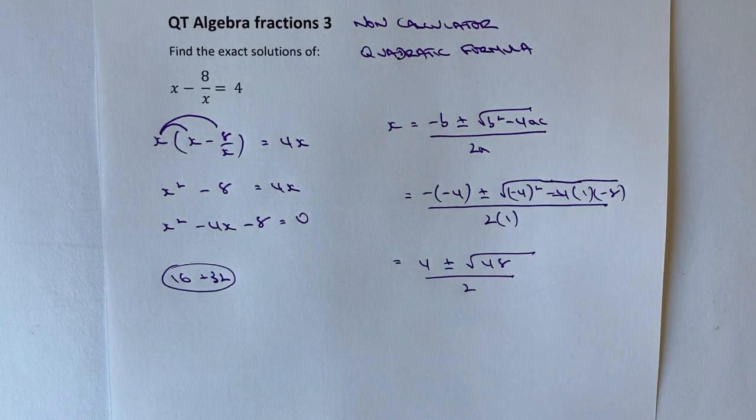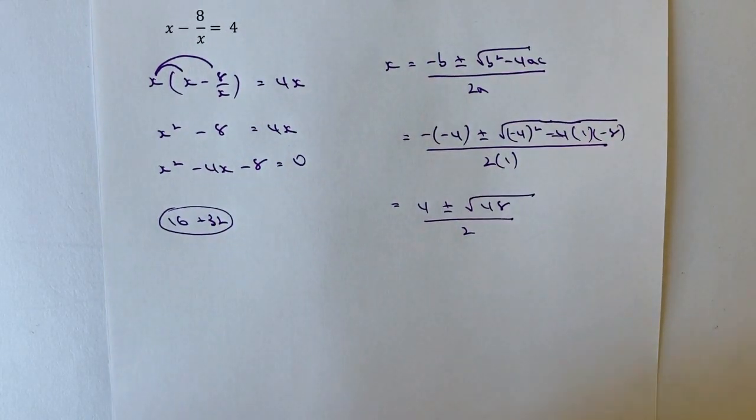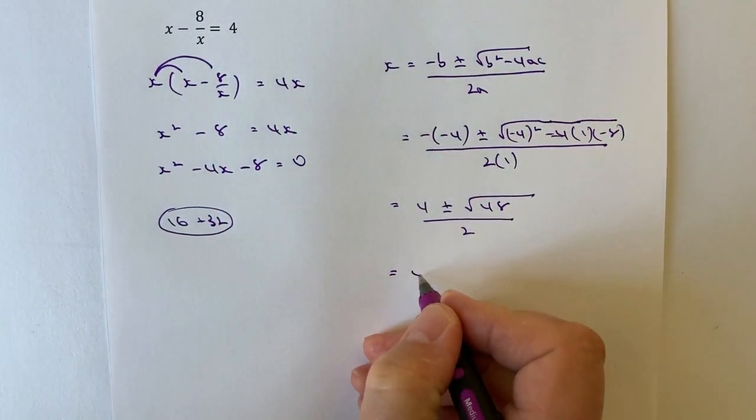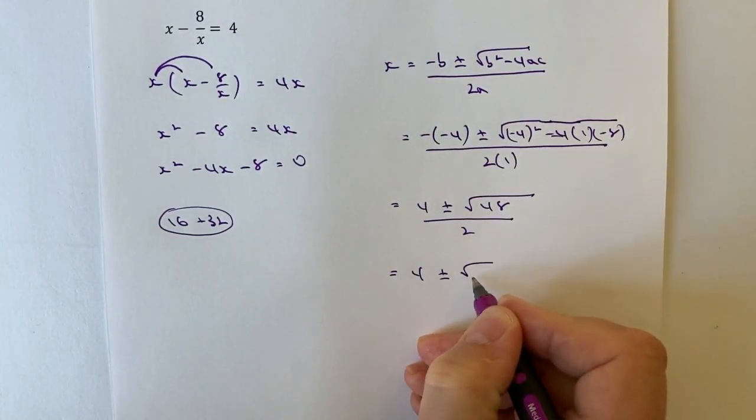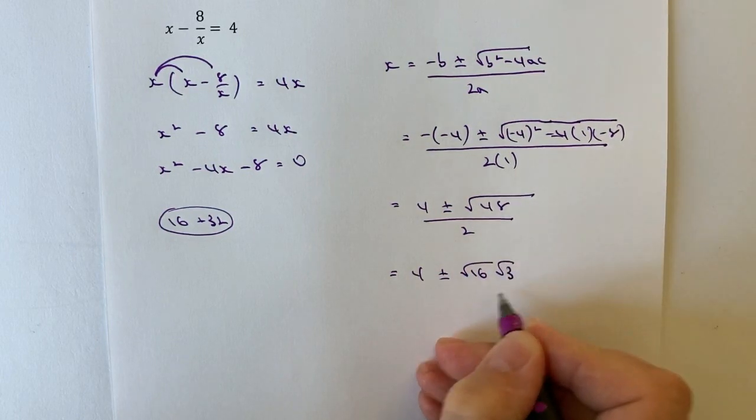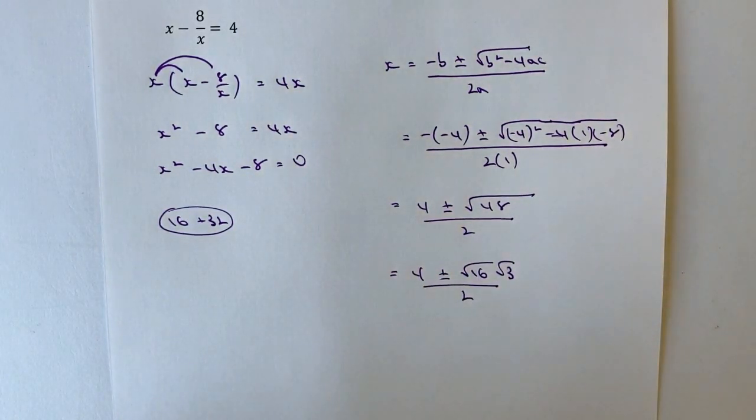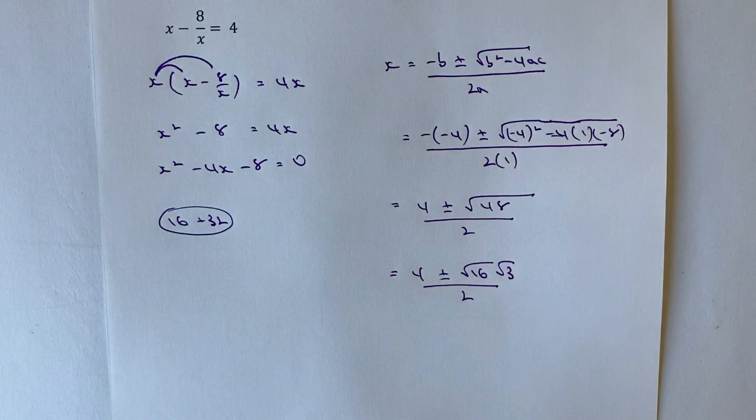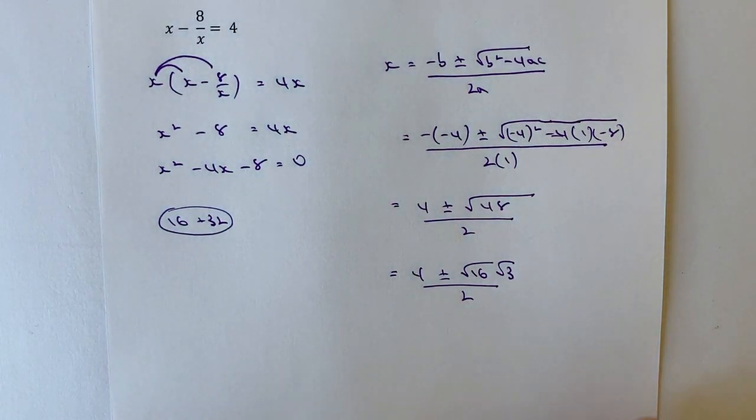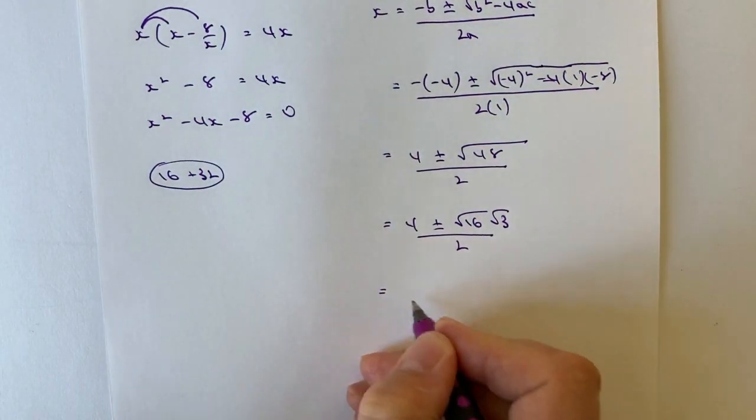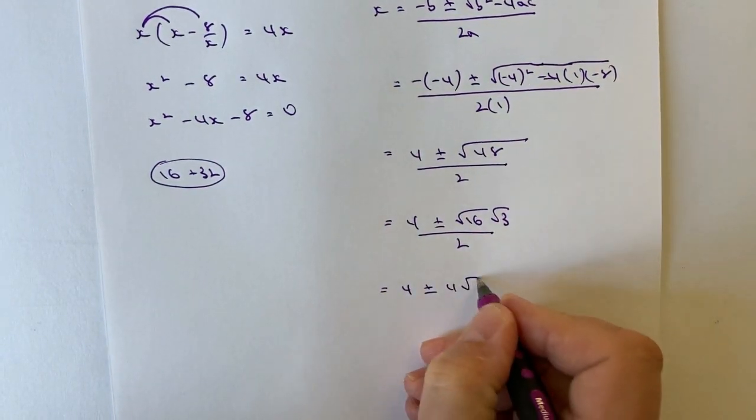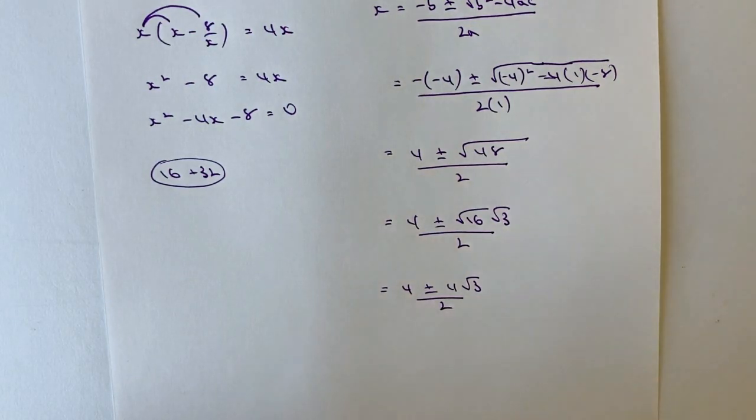So the thing about 48 is actually I can write that in a slightly different way. What I can do is I can write that as the root of 16 multiplied the root of 3 divided by 2. Now if you remember the root of 16 is 4. So I'm in a position where I can write this now as 4 plus or minus 4 root 3 divided by 2.